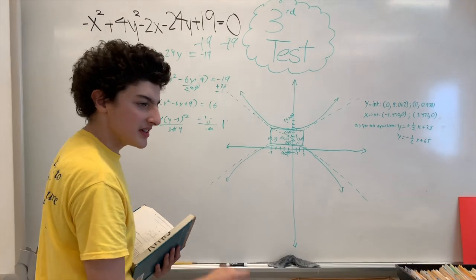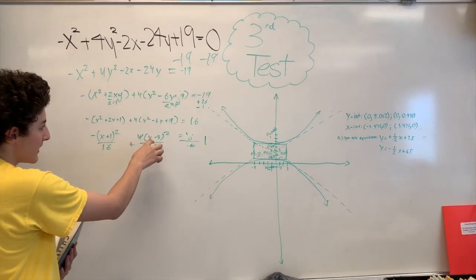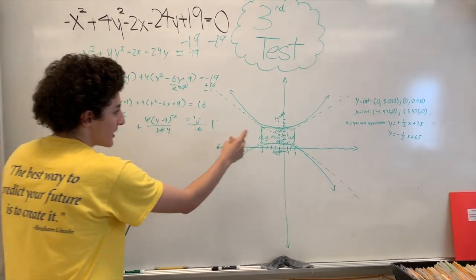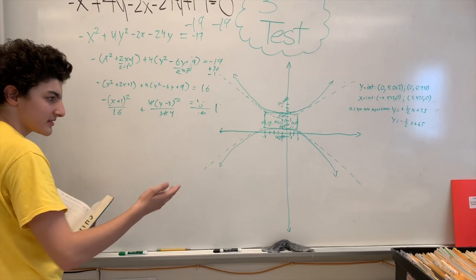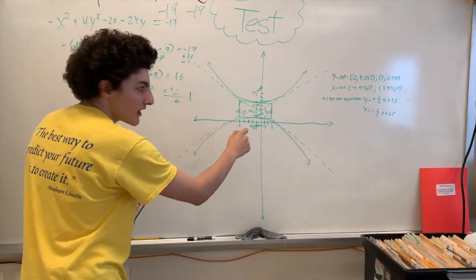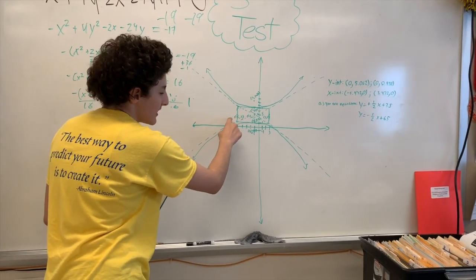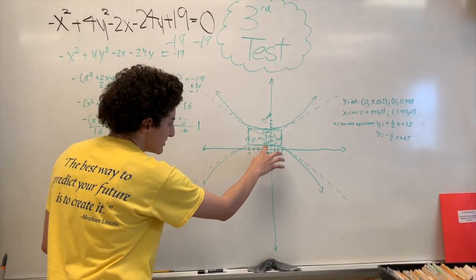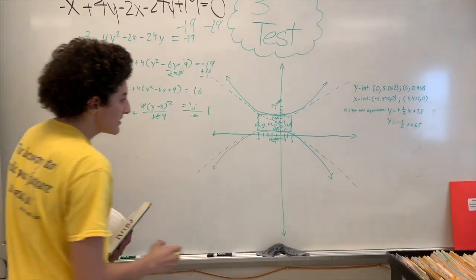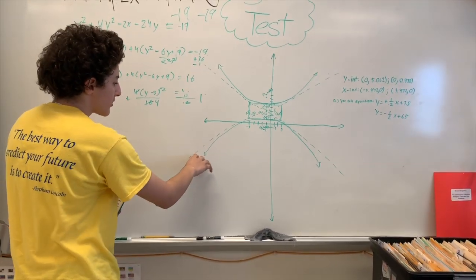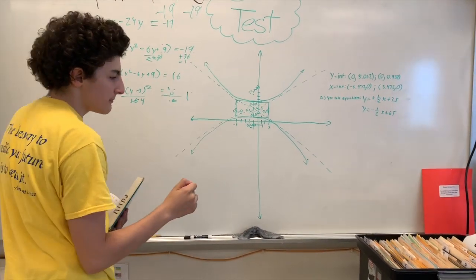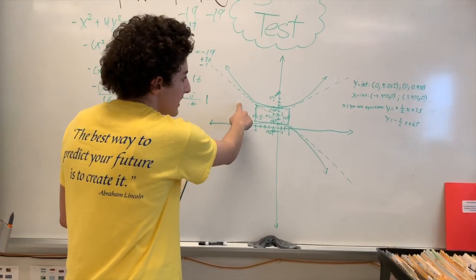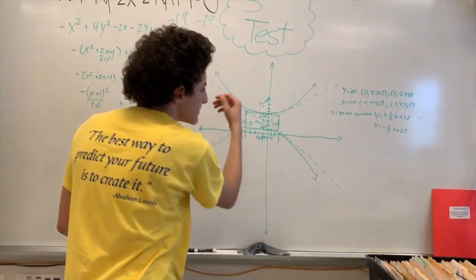I have now inputted the equation into the graph. The center of the hyperbola is at (negative 1, 3) — from (x plus 1) giving negative 1, and (y minus 3) giving positive 3. For the horizontal vertices, we take the square root of 16, which is 4, so there are vertices at (negative 5, 3) and (3, 3). For the other direction, the square root of 4 is 2, so there are also vertices at (negative 1, 1) and (negative 1, 5). This allows us to draw a guiding square, and from corner to corner we draw the asymptotes, which show the boundaries of our hyperbola. The equations of the asymptotes are y equals one-half x plus 3.5 and y equals negative one-half.